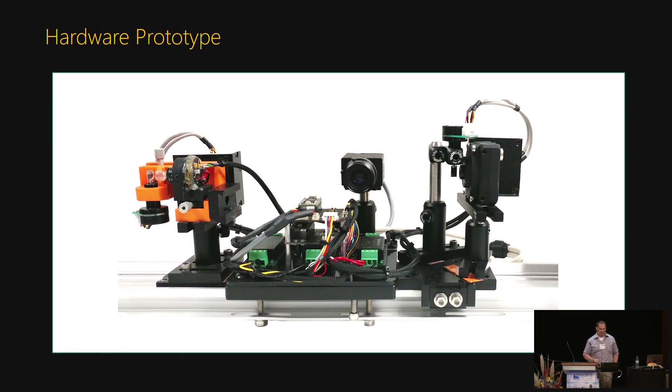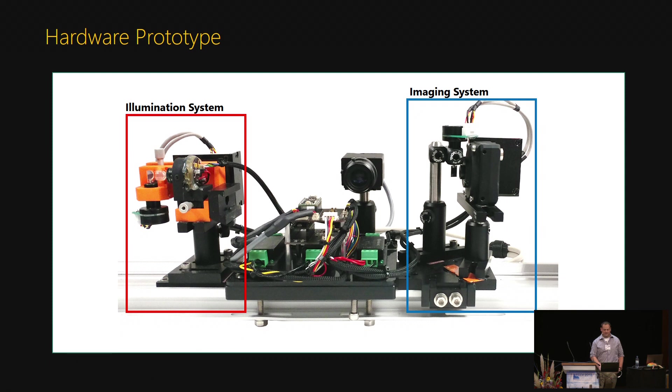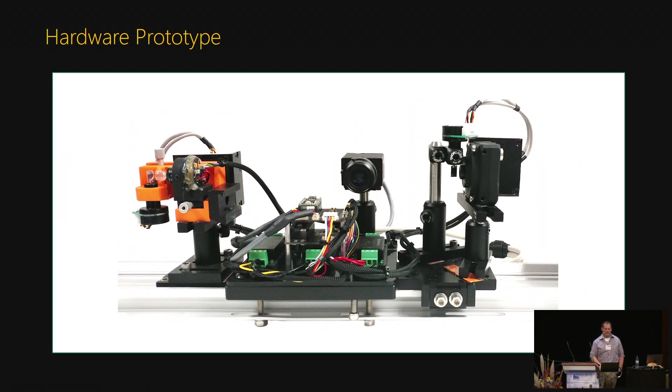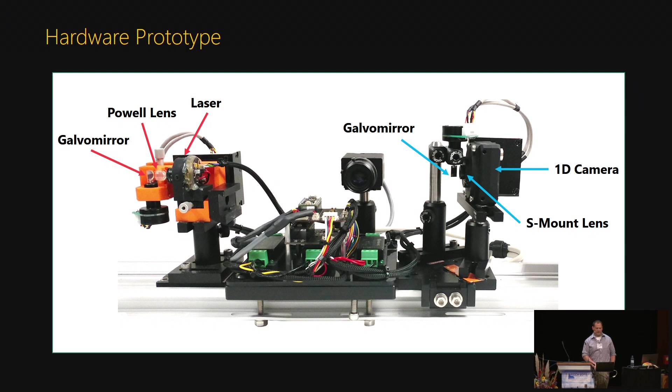This is our hardware prototype. It consists of the illumination system, the imaging system, the power and control circuitry, and a helper camera that is used for calibration and visualization only. Here are the three parts of the illumination system. You have the laser, the PAL line lens, and the galvomirror. For the imaging system, the line camera, the S-mount lens, and another galvomirror are here.